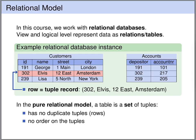In this course we are working with relational databases, which are based on the relational model. In the relational model, the view and the logical level represent data as relations or tables. We have two example tables: the customers table and the accounts table. You can think of these tables as classes in object-oriented programming — each row represents one object belonging to the class, and the columns represent properties that all objects in the class share. So every customer has an ID, a name, a street, and a city property. Every account has a depositor and an account number.